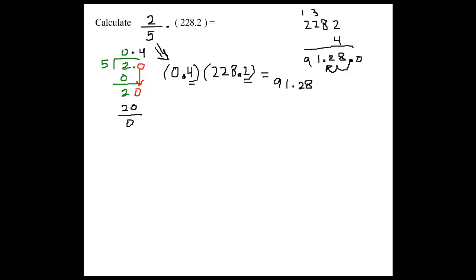Richard, can you tell me what would be the other way to get the same answer? The other way to get the same answer would be to convert the decimal 228.2 into a fraction. Very good. Converting a decimal to a fraction. Can you tell me how to do that?